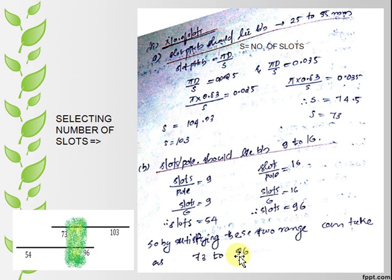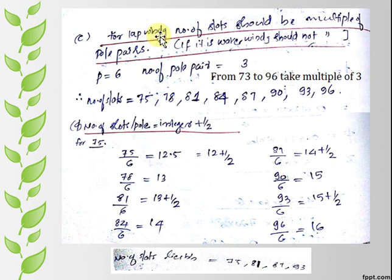The third consideration: number of slots should be multiple of pole pair. Pole is six, pole pair is three. Then check for multiples of three from 73 to 96. These are the new values for slot.